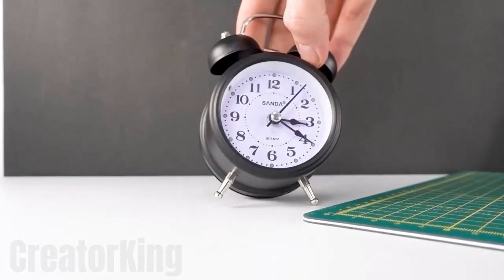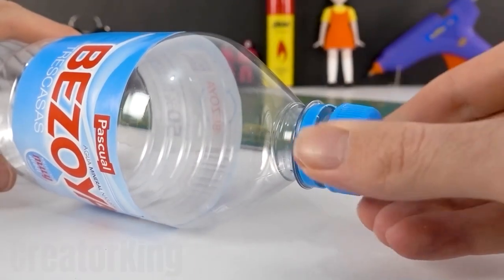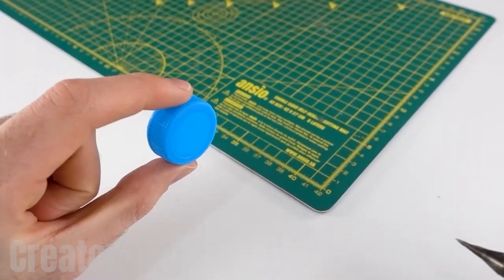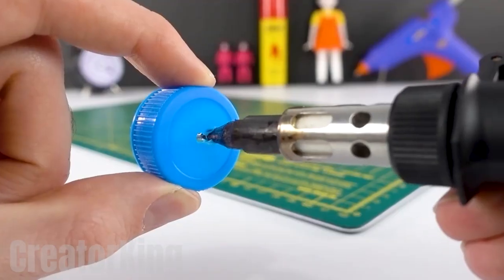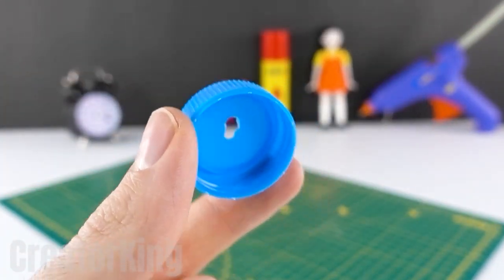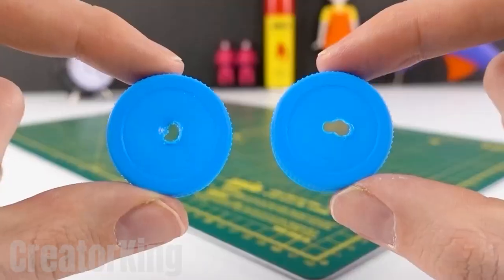Let's leave the clock alone for a moment while we make the launching mechanism for the alarm projectiles. For this, we'll need to make a small central hole in the center of two caps using a hot soldering iron. Once we have both caps ready, put them aside and get a double pivot toy motor.